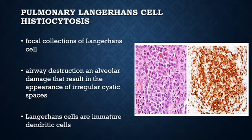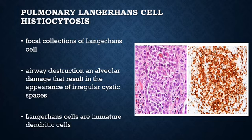Pulmonary Langerhans cell histiocytosis is a rare disease characterized by focal collections of Langerhans cells. As these lesions progress, scarring occurs leading to airway destruction and alveolar damage that result in irregular cystic spaces. Langerhans cells are immature dendritic cells with grooved, indented nuclei and abundant cytoplasm. They are positive for S100, CD1A, and CD207, and are negative for CD68.